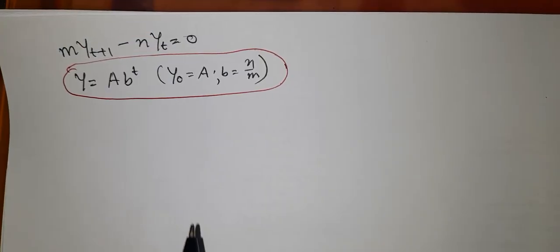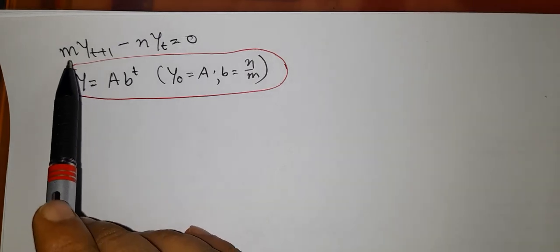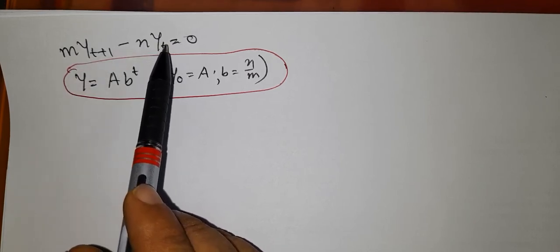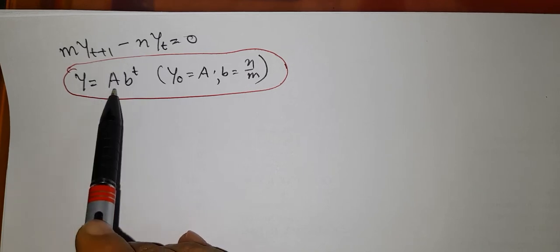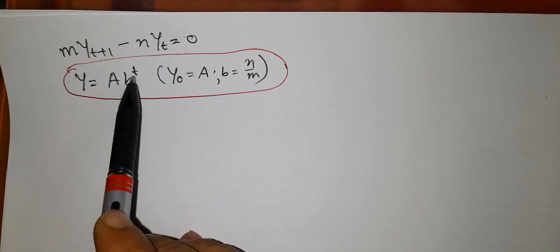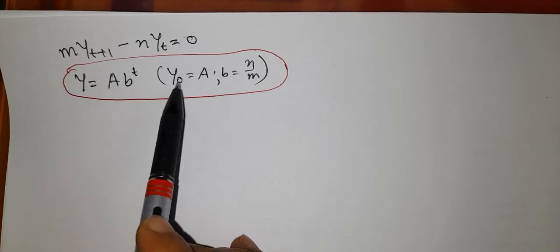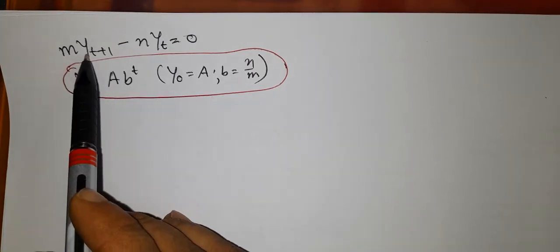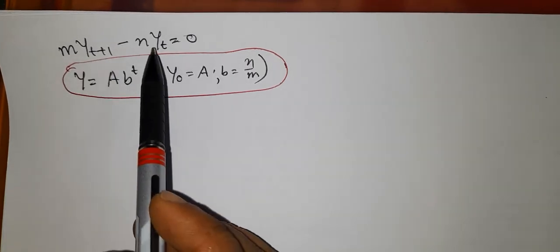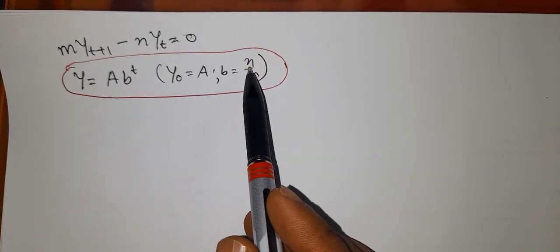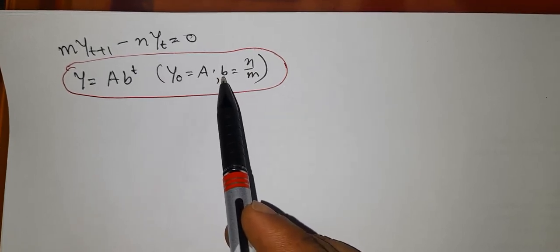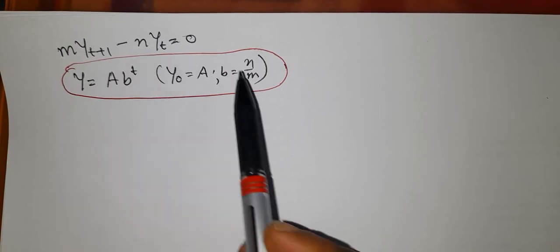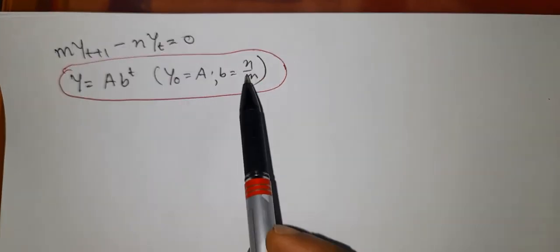We have found that if the difference equation is a homogeneous first order equation, then the solution is y_t = a · b^t, where a is the initial value y_0, and b is the ratio of the coefficient of y_t to the coefficient of y_{t+1}, that is n/m.